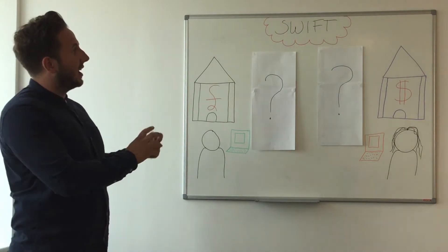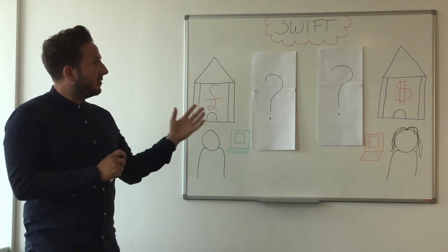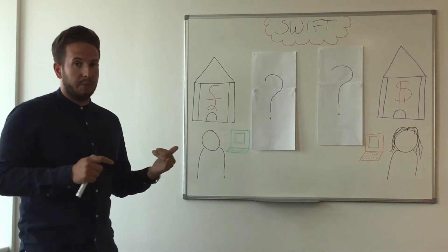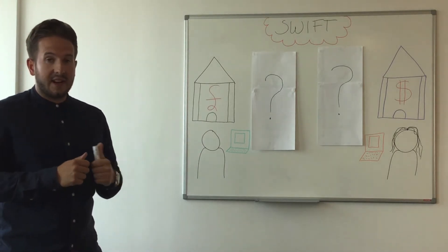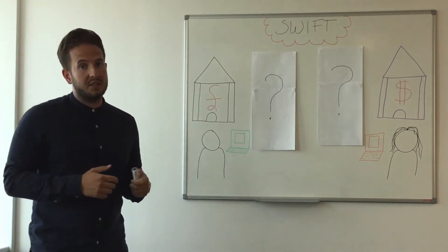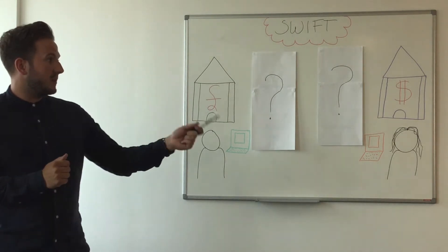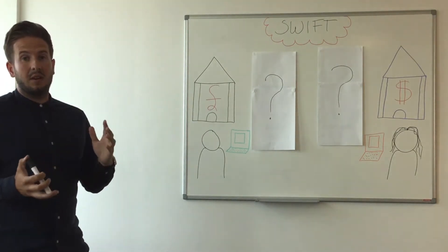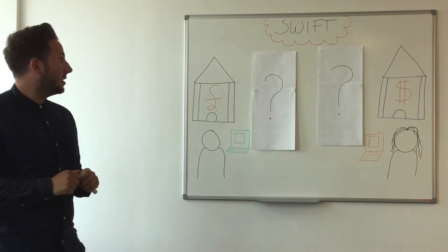Within this payment cycle there can be various things which hold up the flow of funds to the beneficiary. It could be that it's held in repair at a bank, there could be FX involved, charges, or compliance checks — but there's really no way for either the beneficiary or the remitter to see where that payment is at any point in the cycle.